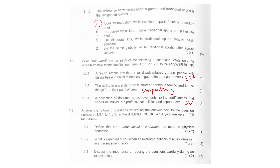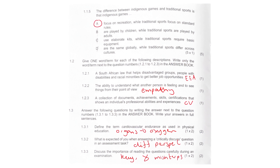1.3 — define the term cardiovascular endurance. It's basically the ability of the heart and the lungs and the circulatory system to supply oxygen. 1.3.2, what's expected of you when answering a critically discussed question? You need to present different perspectives and weigh evidence out. 1.3.3, importance of reading questions carefully during an exam — well, it ensures that you understand the keywords, the command words, the verbs, and you just avoid misinterpretation.